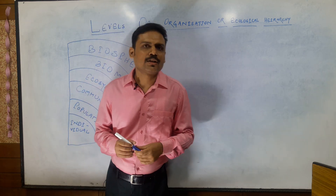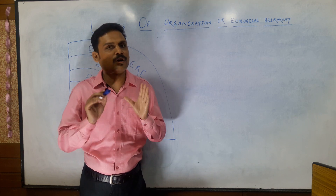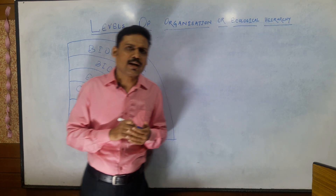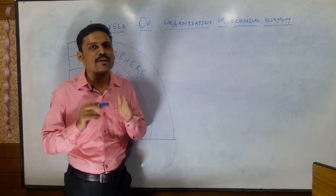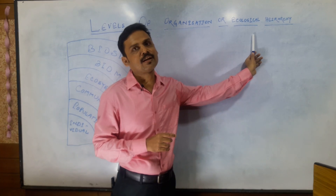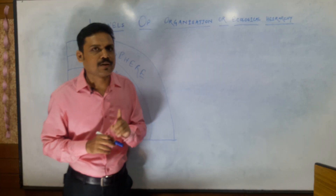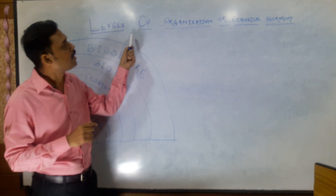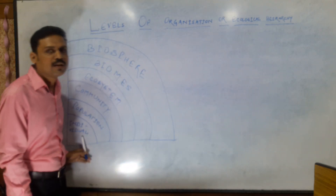As I have told you earlier, all the living organisms reside inside the biosphere, or the sphere of life, or the living world. Each and every form of life forms a biosphere. Now inside that biosphere, organisms are arranged at different levels keeping in mind their interaction or relation with one another. That very arrangement is known as levels of organization or ecological hierarchy.